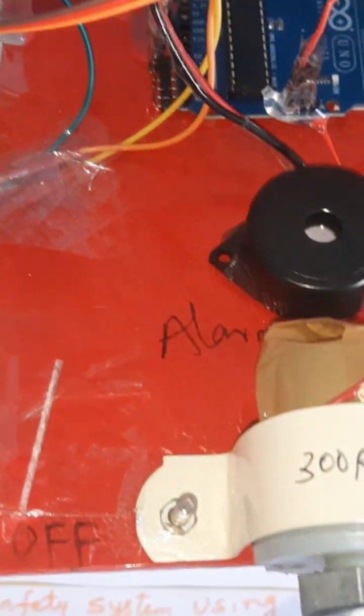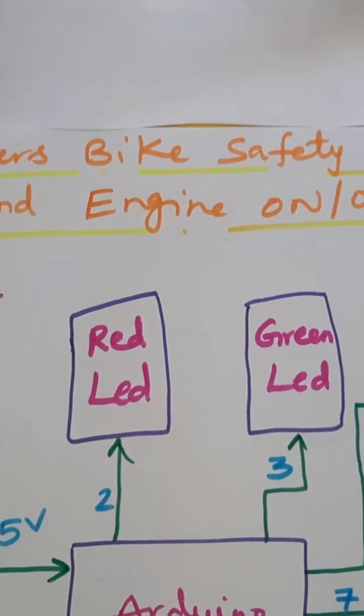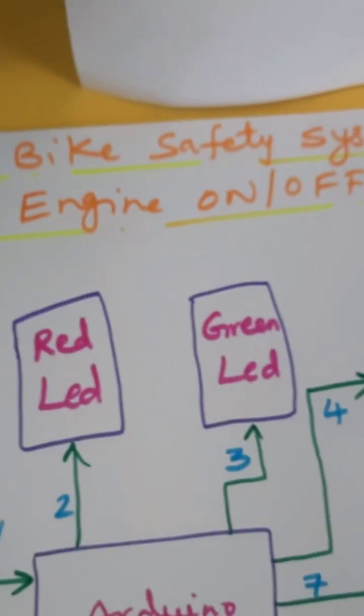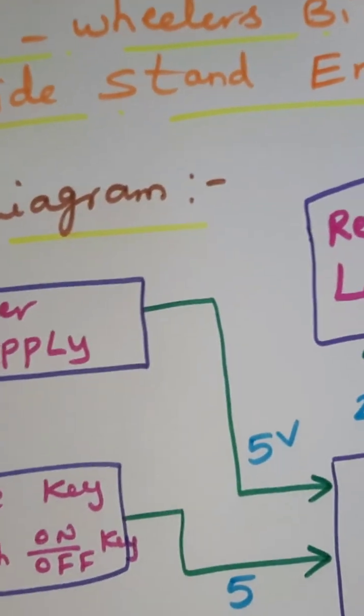Hi, we are from SVS Embedded. The project title is Two-Wheeler Bike Safety System using Side Stand Engine Lock/Unlock System with Arduino. In this project we are using a 0 to 9 volts adapter as the power source.